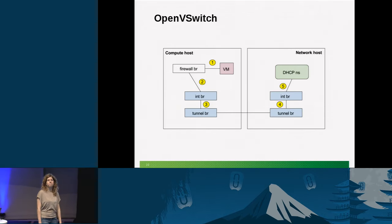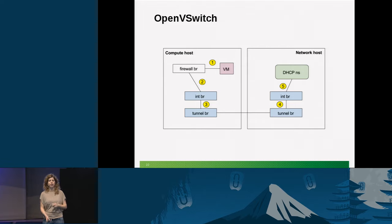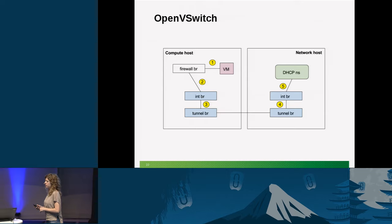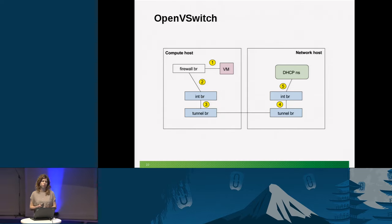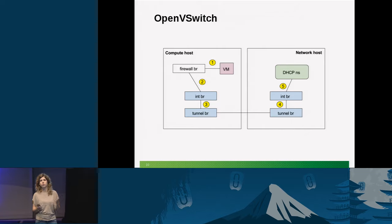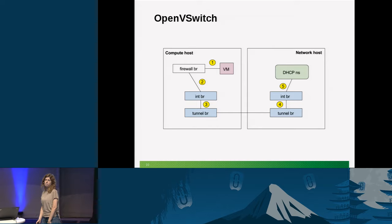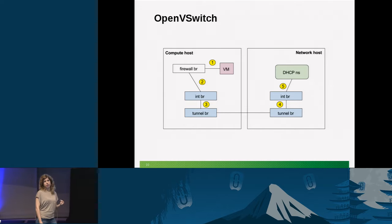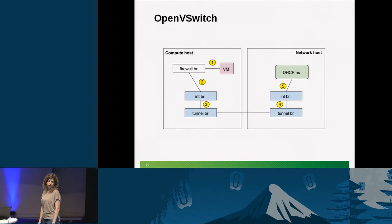Now I really want you to understand the journey of the packet. In networking problems, it's important to know where the packet is supposed to be, so you can investigate where it gets dropped or lost. There are two default implementations in Neutron: OpenVSwitch and LinuxBridge. I will explain both, starting with OpenVSwitch.